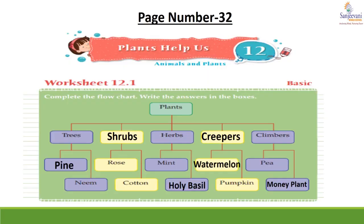Children, now come to page number 32, worksheet 12.1 — complete the flowchart, write the answers in the boxes. You have to complete the flowchart according to the categories given. In the first column, first box you will write shrubs — S-H-R-U-B-S — and in the second box you will write creepers — C-R-E-E-P-E-R-S.